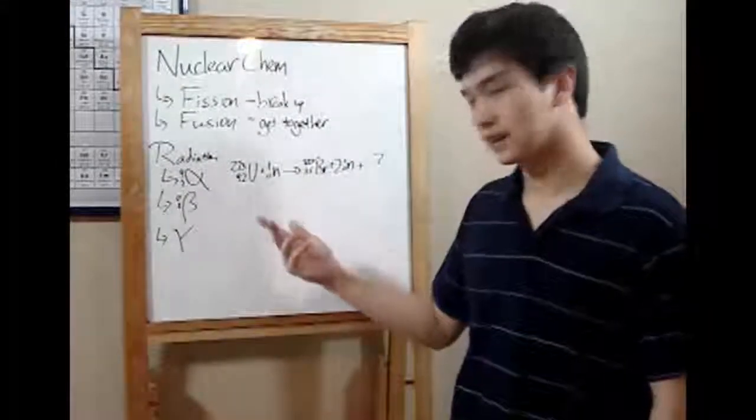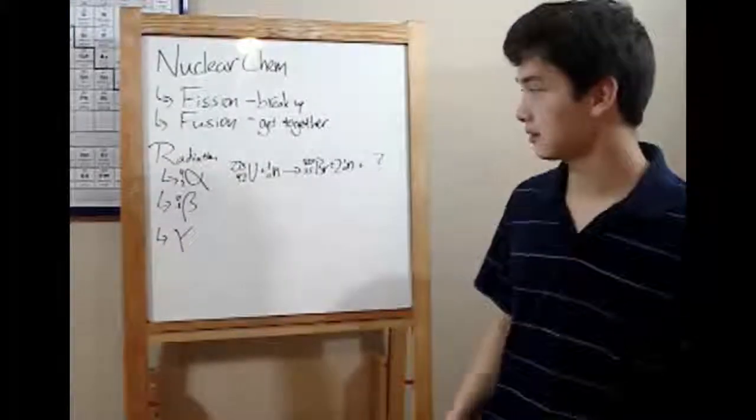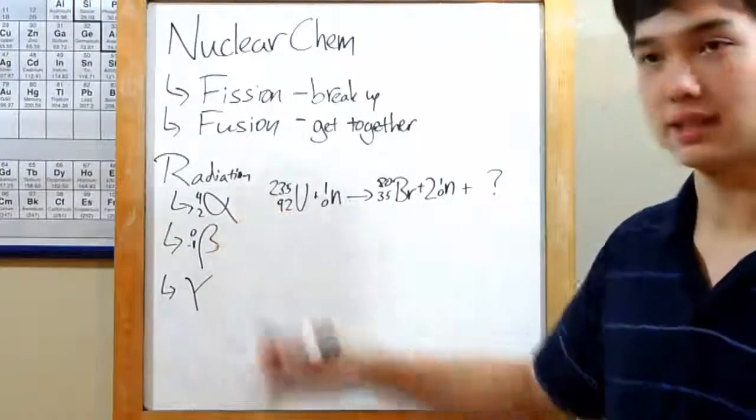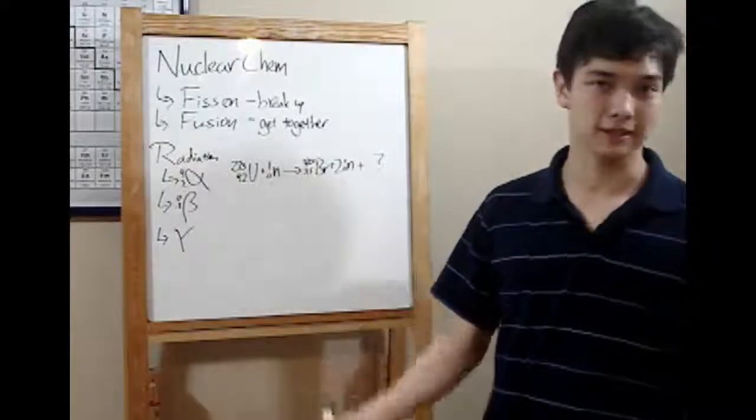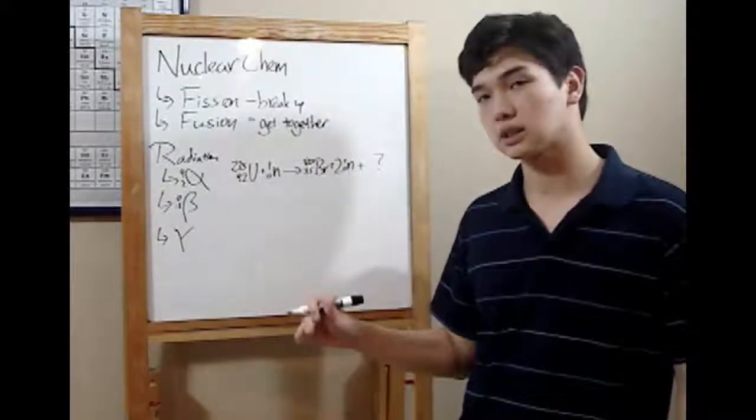And then three different types of radiation can occur in a nuclear chemistry reaction. You might not see all three at once, but you'll probably see one of these in a few reactions. The first one is the alpha particle. The alpha particle is just a helium nucleus, two protons, two neutrons, only no electrons circling it.